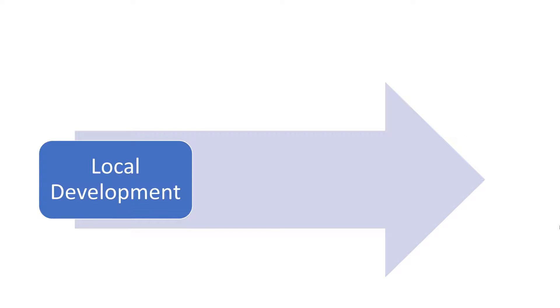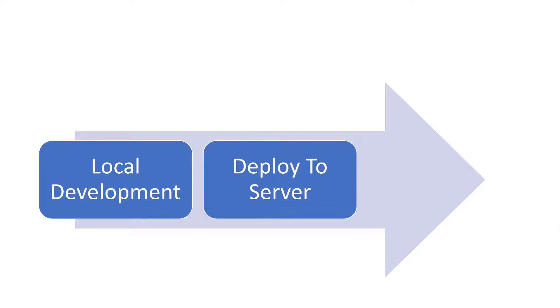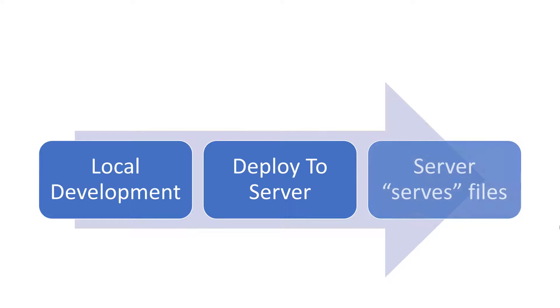Your development workflow probably looks something like this. First, you develop locally on your machine. Second, you deploy the code to some server. And third, the code is then run or served by the server. And if there are updates, you repeat steps 1, 2, and 3.